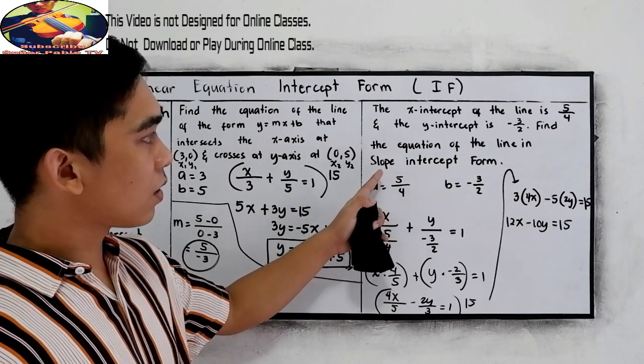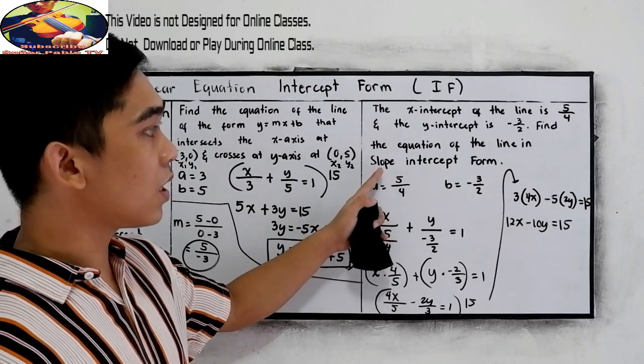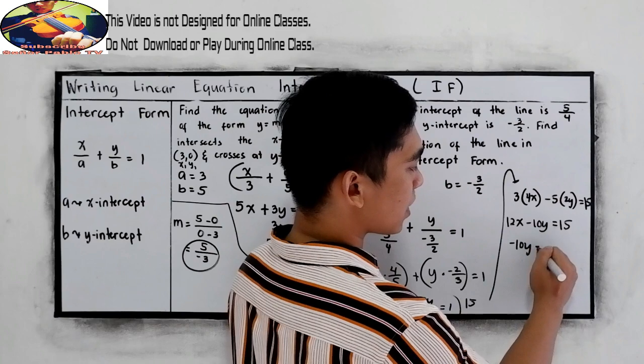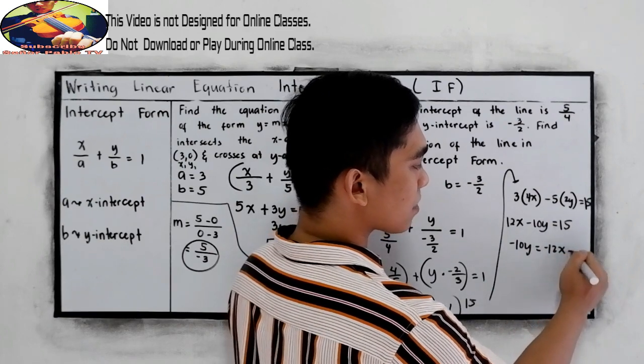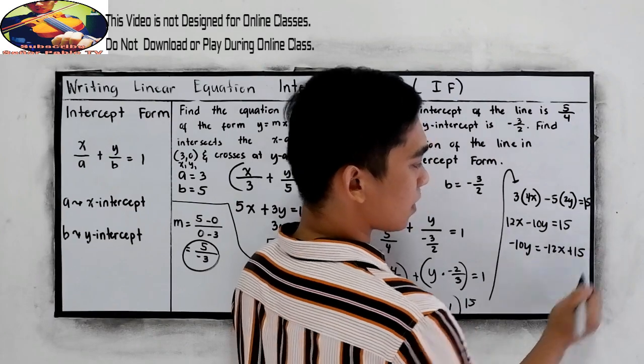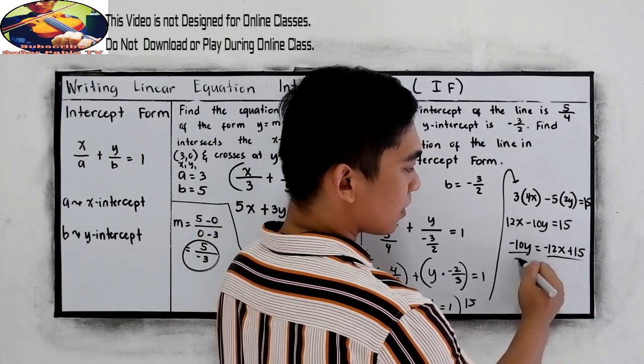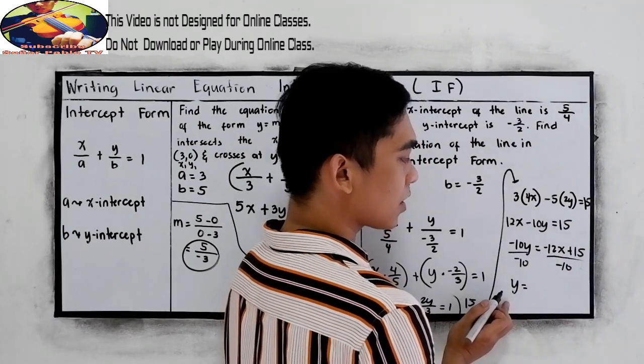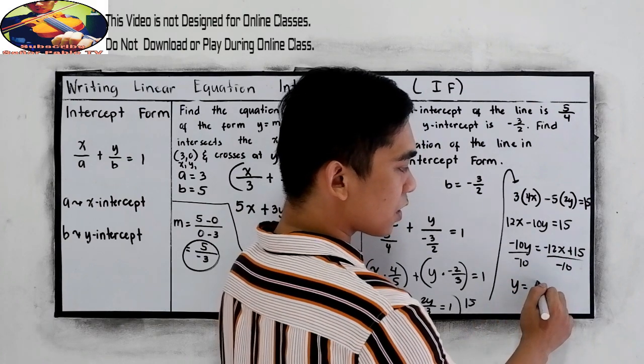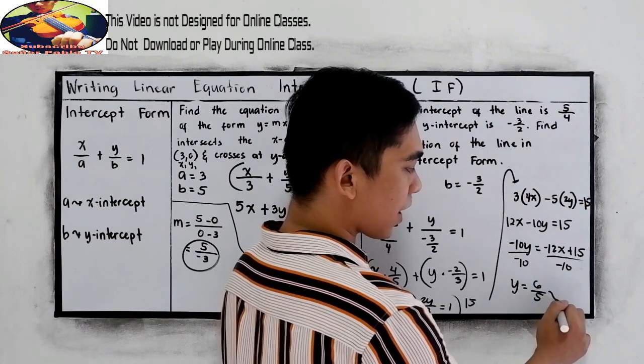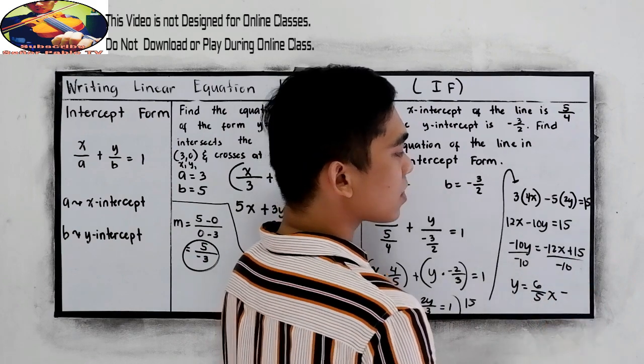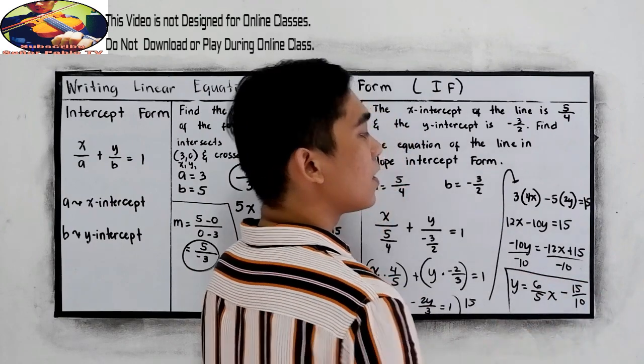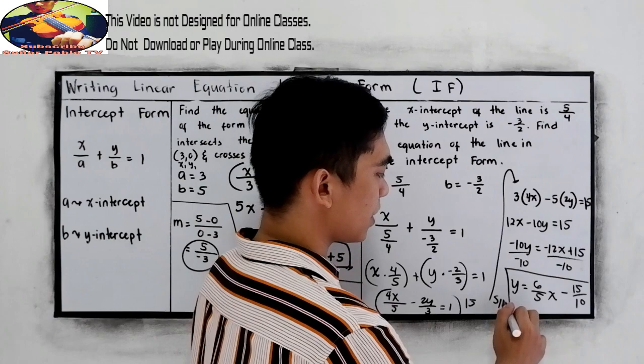We are asked to find the equation in slope-intercept form. So, we have negative 10y equals negative 12x plus 15. Now, divide by negative 10. y equals negative divided by negative, that is positive. Reducing to lowest terms, 6 over 5x, minus 15 over 10. So, this will be our slope-intercept form.